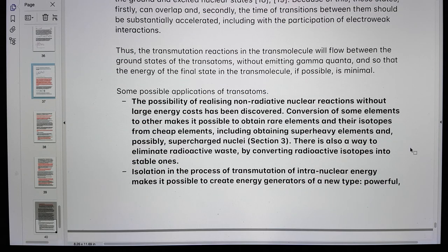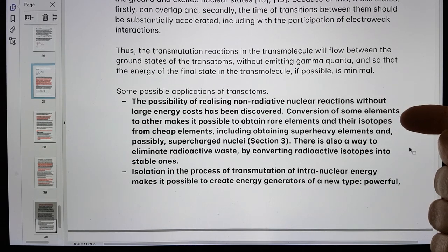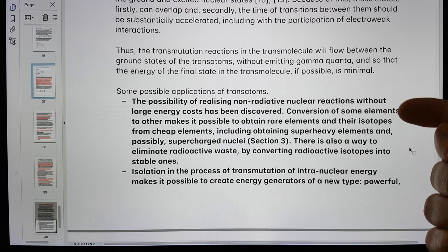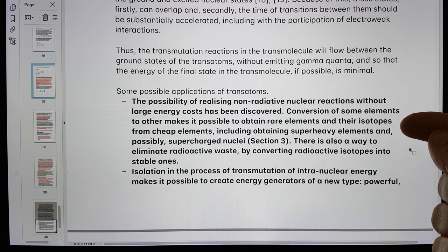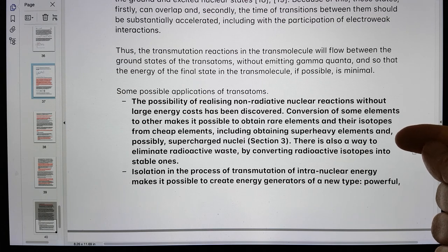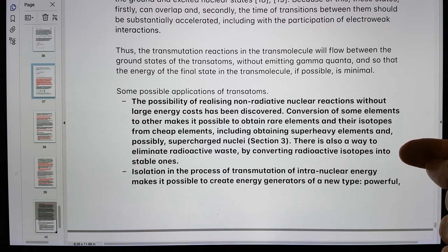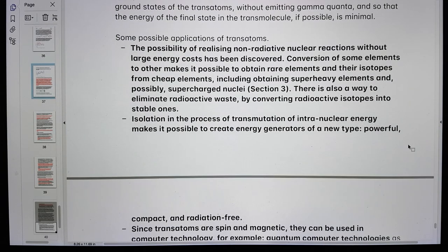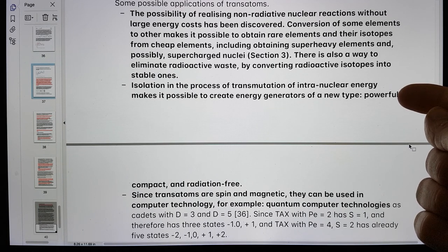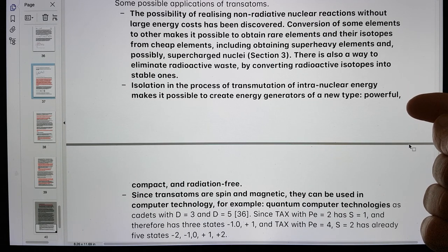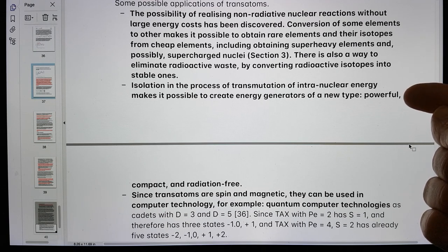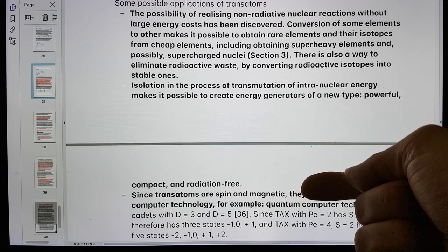Some possible applications of transatoms. The possibility of realizing non-radiative nuclear reactions without large energy costs has been discovered. Conversion of some elements to others makes it possible to obtain rare elements and their isotopes from cheap elements, including obtaining super heavy elements and possibly super charged nuclei. There is also a way to eliminate radioactive waste by converting radioactive isotopes into stable ones. Isolation in the process of transmutation of intranuclear energy makes it possible to create energy generators of a new type - powerful, compact and radiation free.